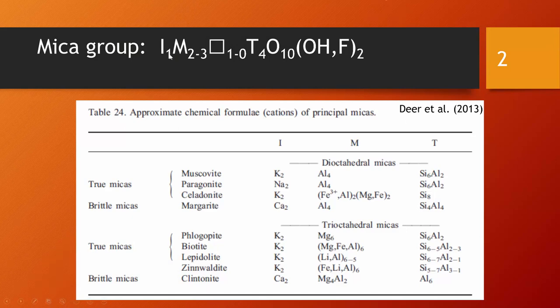We see here the general structural formula of the mica group. There is an I position which has one cation. On the M position, an octahedral position, there might be two to three cations. Because of this variability, this position might be partially vacant. We see here the symbol for a vacancy on that M position, which might be one to zero cations, depending on whether we have two or three metal ions on that position.